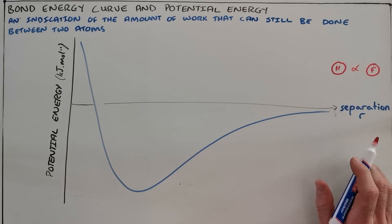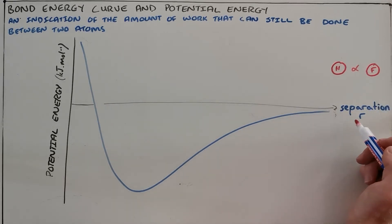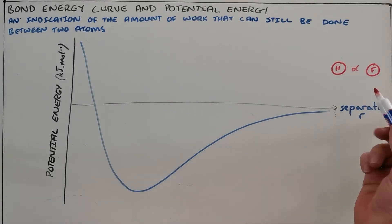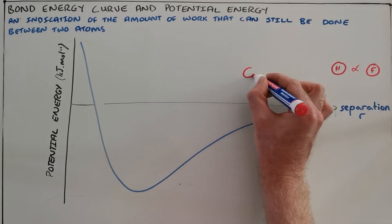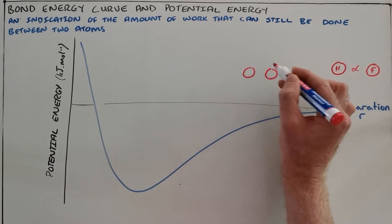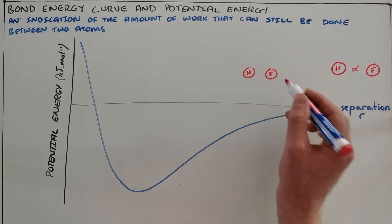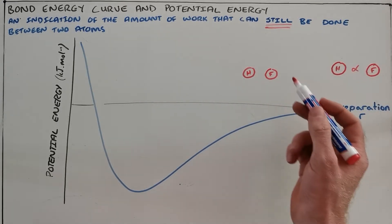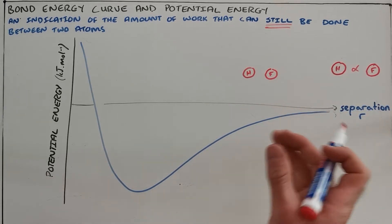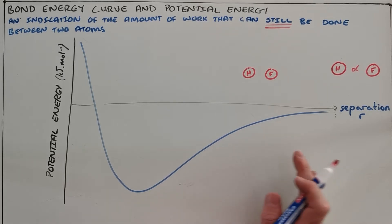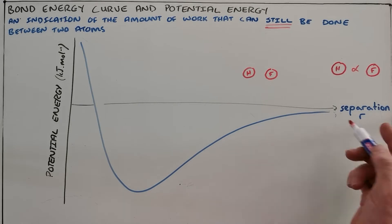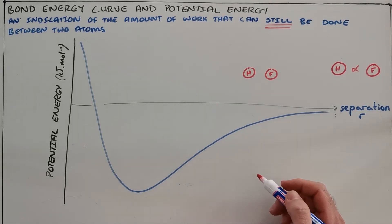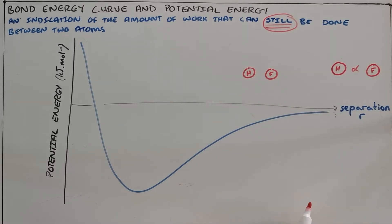Technically the potential energy will never be zero, but at infinite distance it is infinitely close to zero. On the y-axis we have the potential energy between these two particles. As the two particles approach each other the electrostatic force starts to act between them, attracting them. The potential energy decreases as they get closer together because there is less work for them to do — they cannot keep approaching each other indefinitely.